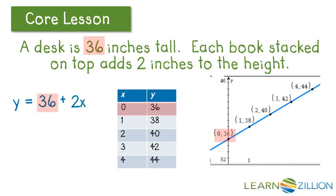Then, as we add every book one at a time, it adds 2 more inches to the height. But the height with 0 books on it is 36 inches, and that's the y-intercept, or our starting value.